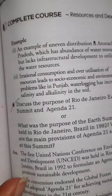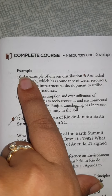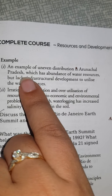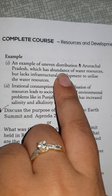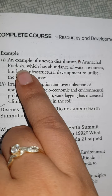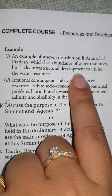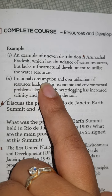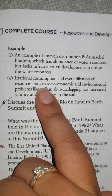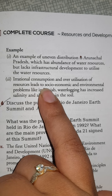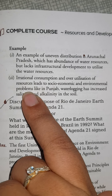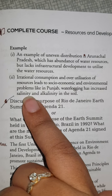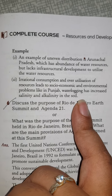Some examples are: First, an example of uneven distribution — Arunachal Pradesh has abundance of water resources but lacks infrastructure development to utilize them. Second, irrational consumption and over-utilization of resources leads to socio-economic and environmental problems, like in Punjab where water logging has increased salinity and alkalinity in the soil.